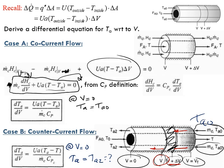So we have an issue, but we will learn how to deal with it. As you may be thinking, we will use trial and error: we guess a value for Ta2 at V = 0, solve the equation, and check whether at the exit we get the known value Ta0. We'll solve a problem in the second segment of this lecture — see you soon.